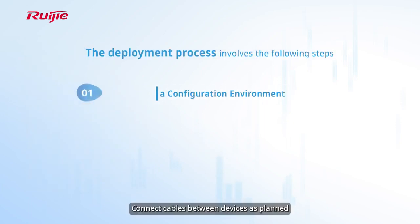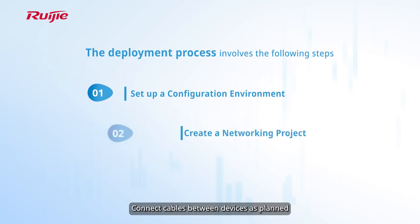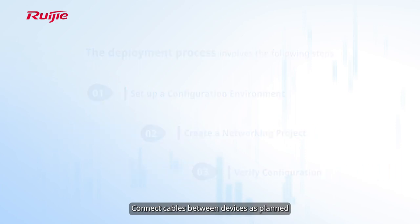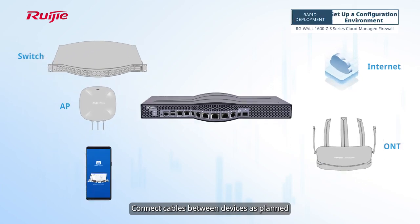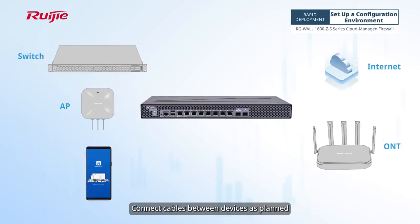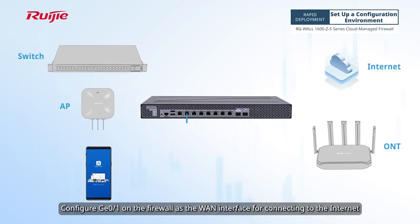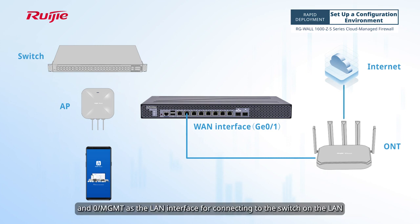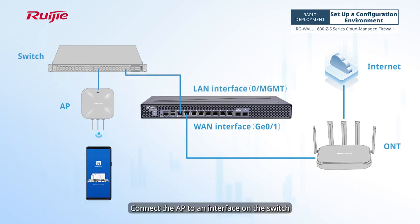The deployment process involves the following steps: set up a configuration environment, create a networking project, and verify the configuration. Connect cables between devices as planned. Configure interface 0/1 on the firewall as the WAN interface for connecting to the internet, and 0/MGMT as the LAN interface for connecting to the switch on the LAN. Connect the AP to an interface on the switch.